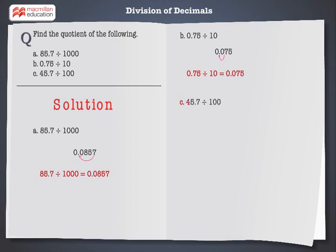45.7 divided by 100. The decimal point will be moved two places to the left as it is divided by 100. Hence the quotient of 45.7 divided by 100 is 0.457.